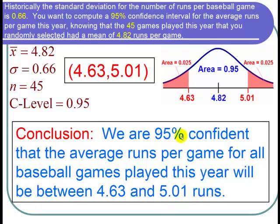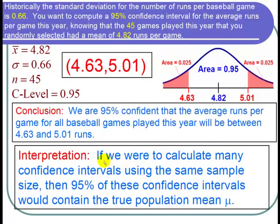Now let's interpret what this 95% means. That's a probability, and here's how we interpret this probability. If we were to calculate many confidence intervals using the same sample size—that means if we used a sample size of 45 for each of these confidence intervals—